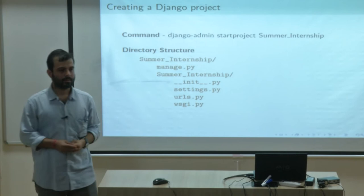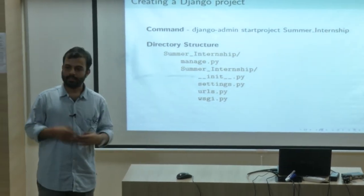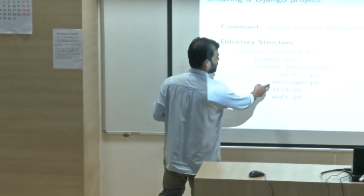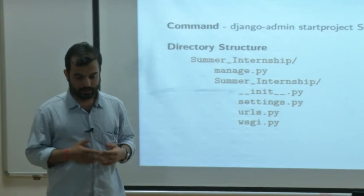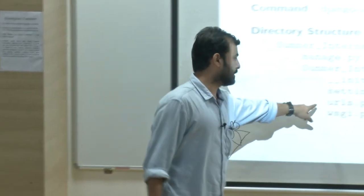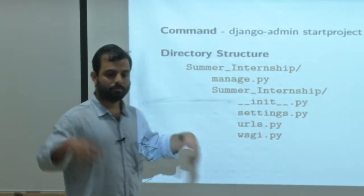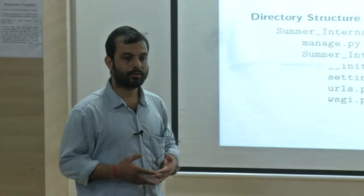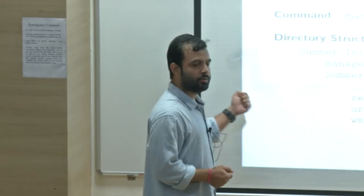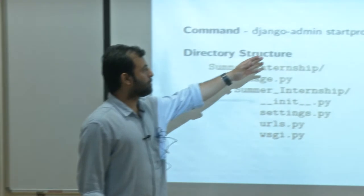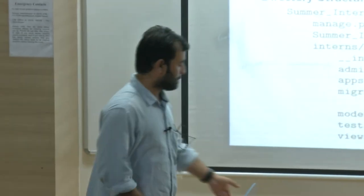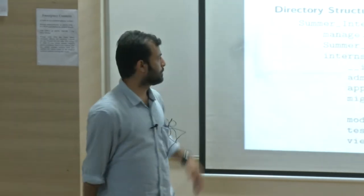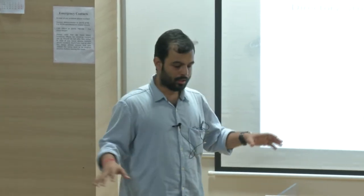In your settings file, you define your database settings, caching settings, and REST API settings — every setting related to Django is defined there. All your URLs and routers will be defined in the URL file. Whatever functions you write, you map them to a URL. Django also provides a development server internally — you can do 'python manage.py runserver' and it gives you a temporary server. When you start a project, you divide it into sub-modules: for summer internship there might be an institute module, intern module, teachers module, and projects module.